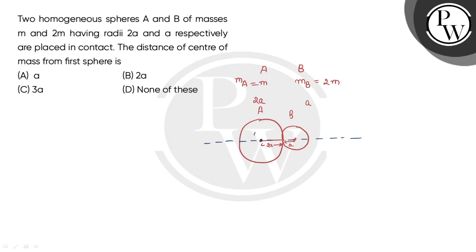We take sphere A as the origin. We need to find the coordinates of the center of sphere B. The distance to the center of B from the origin would be 2A plus A, which equals 3A. So the coordinates of B are 3A and 0.